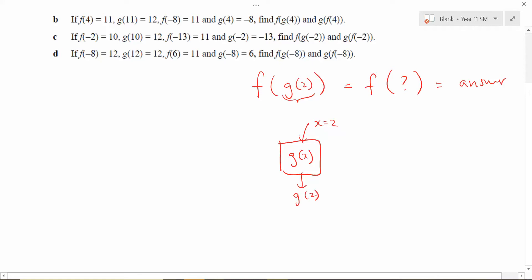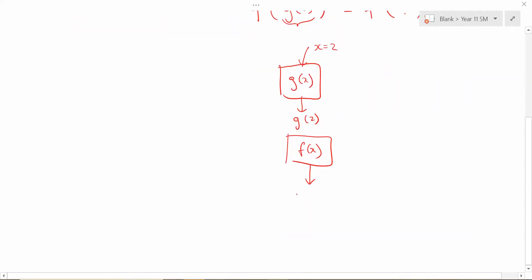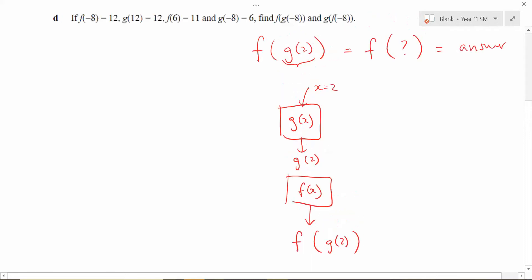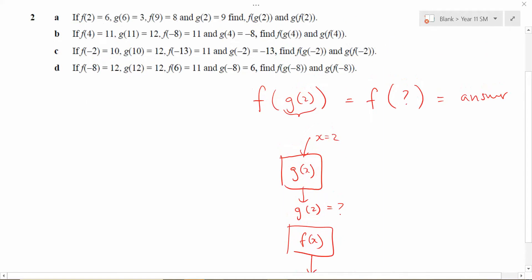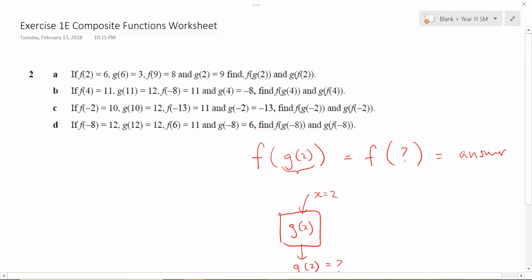You put x equals two into the g of x function, you get g of two. Whatever that g of two is, you are now going to throw that into f of x. And obviously what that spits out is f of whatever g of two is. So the question is, what is g of two equal to? And that's where the information that they've given you, you're meant to use it like a puzzle and figure it out.